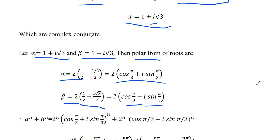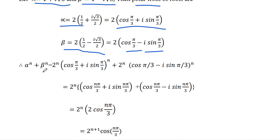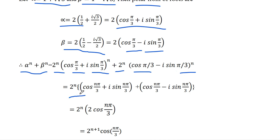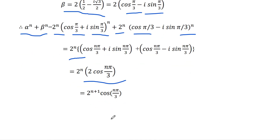Now calculate alpha^n + beta^n. It equals 2^n(cos(π/3) + i·sin(π/3))^n + 2^n(cos(π/3) - i·sin(π/3))^n. This simplifies to 2^n · 2·cos(nπ/3), which gives the final answer: 2^(n+1) · cos(nπ/3). So the value of alpha^n + beta^n equals 2^(n+1) cos(nπ/3).